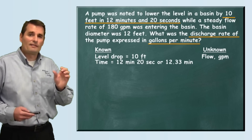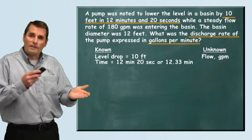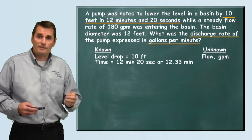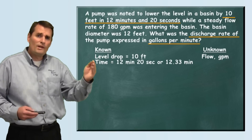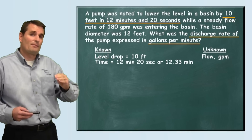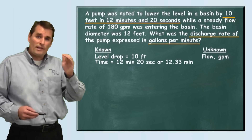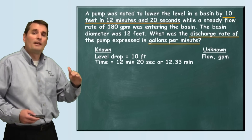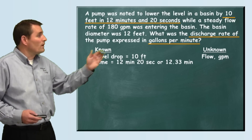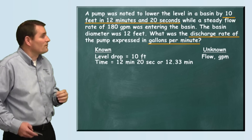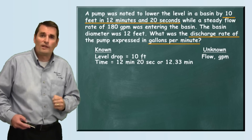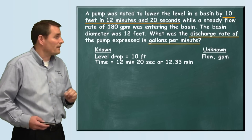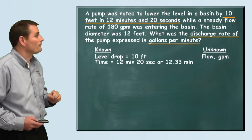We don't want to work with combined units, so we want to get this all into minutes. 20 seconds divided by 60 seconds is 0.333 repeating — it's a third of a minute. So 12 minutes and 20 seconds becomes 12.33 minutes, and we'll be working with 12.33 minutes.